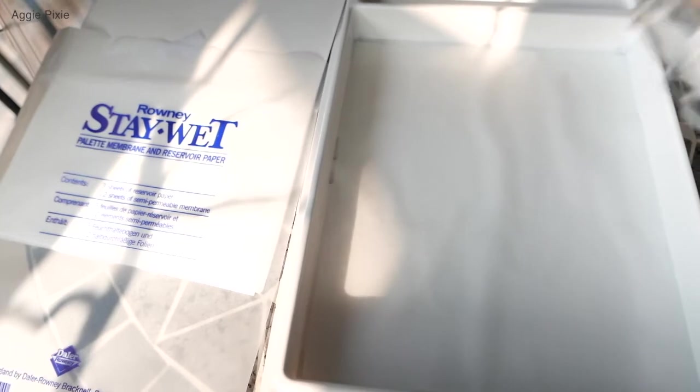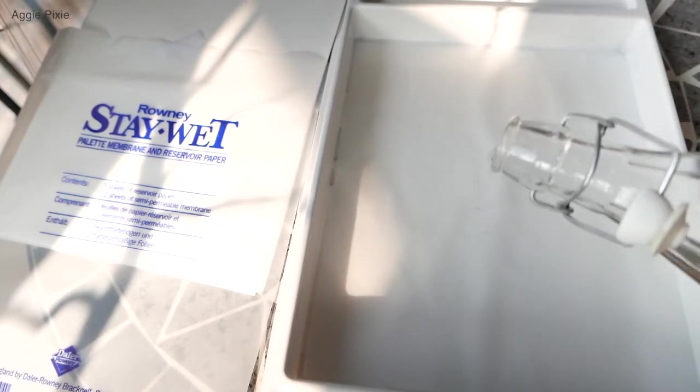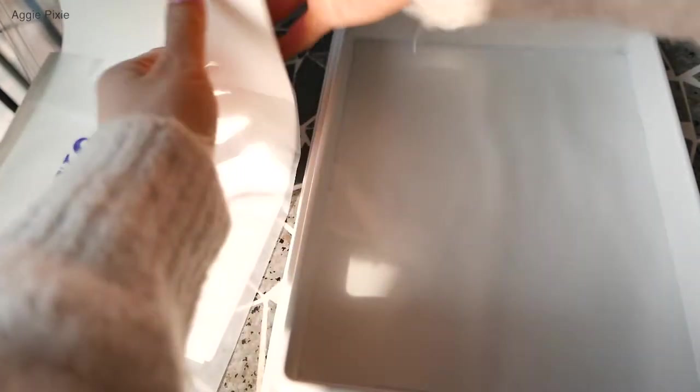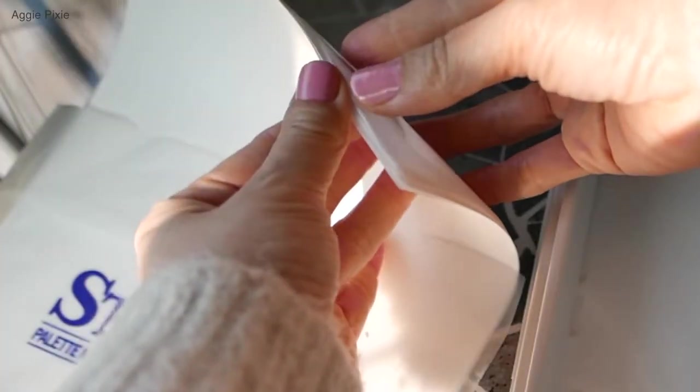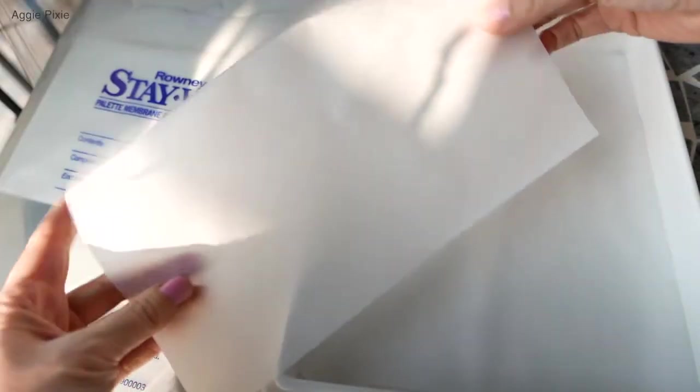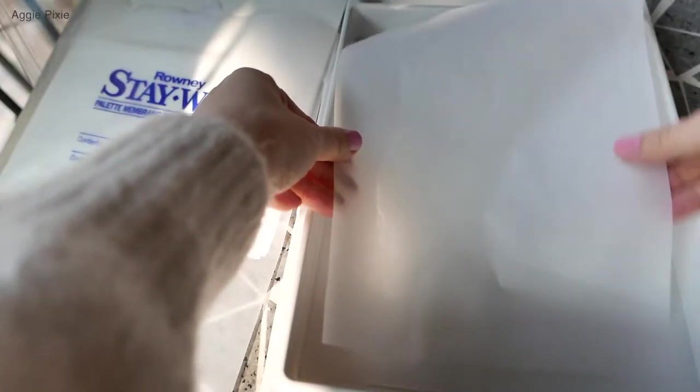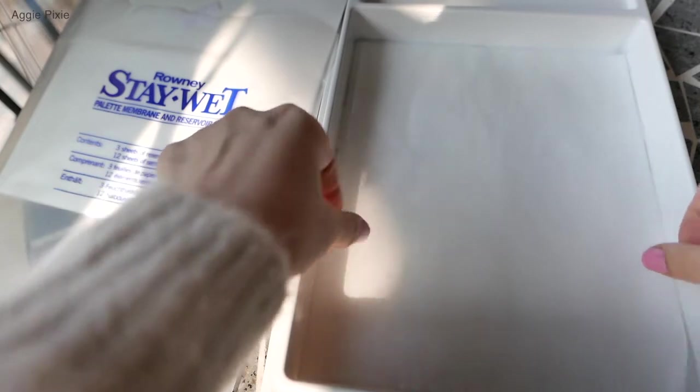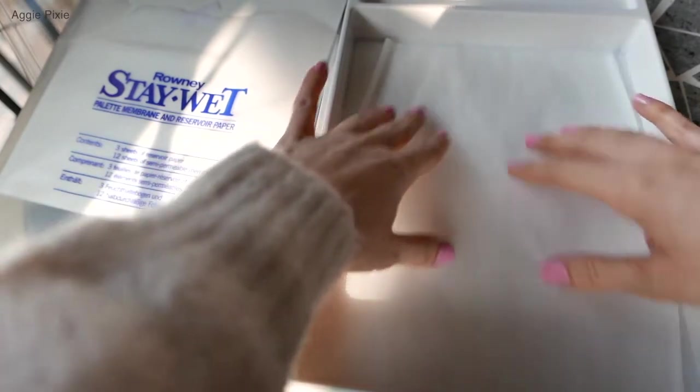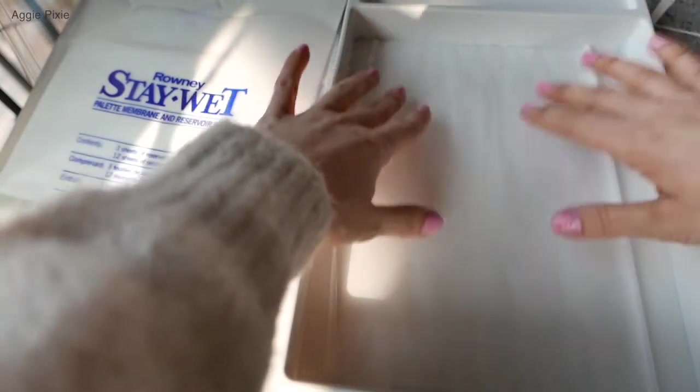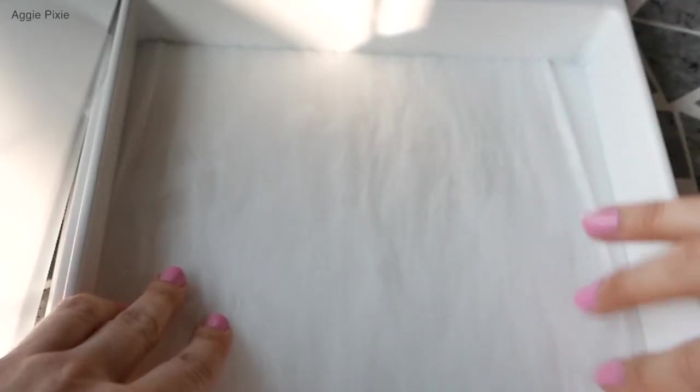Okay then I'm gonna take the thinner paper which is the palette paper or they call it the membrane paper and I'm gonna put that right on top of the other sheet with the water. So I'm just gonna place that on top. And I notice that it does roll to the sides but eventually it does straighten. Just gotta fiddle with it a bit.